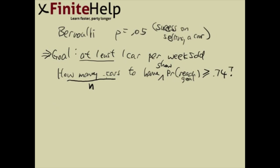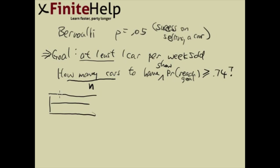N is going to be the number of Bernoulli trials, because each time we show a car, that's one trial. So we show N cars — that's N trials. We want to have at least one success, and the phrase 'at least' should give you the hint that this involves multiple scenarios.